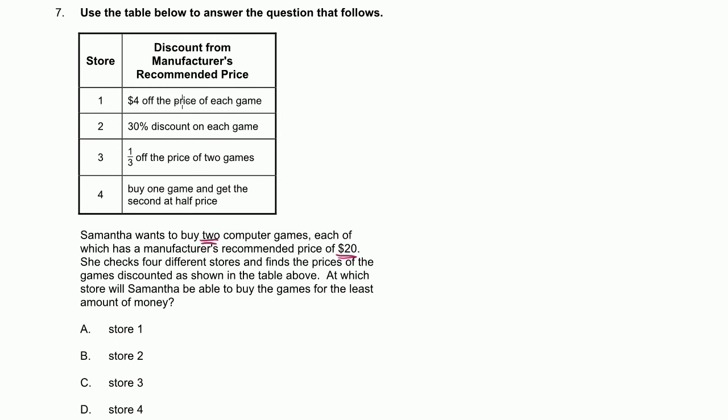So this is $4 off the price of each game. Remember, she's buying two. The manufactured price is $20. So she's going to pay $4 off of $20 for each game. So she's going to pay 16 plus 16, which is equal to 32. That's at store number 1.